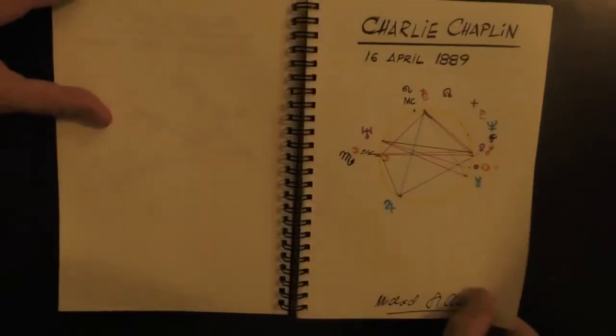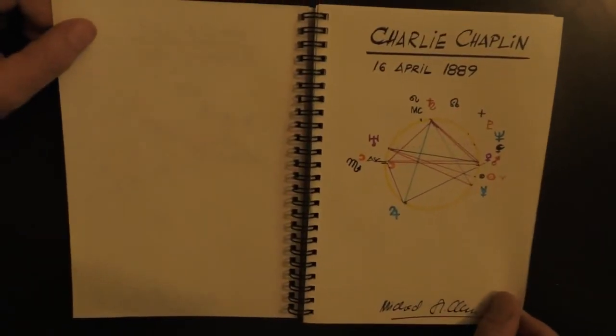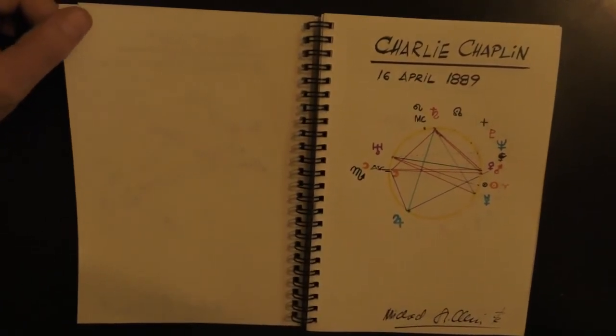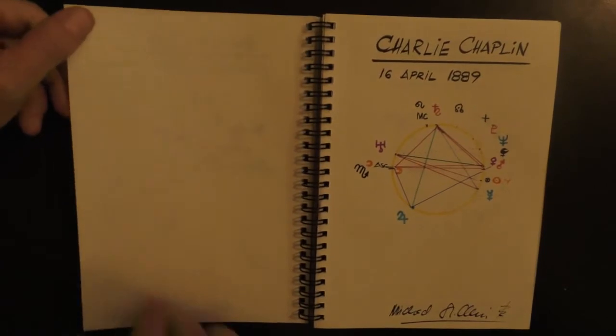Charlie Chaplin, 16 April, Aries, Scorpio rising, Scorpio moon. Could see in his eyes the intensity, he was always there.